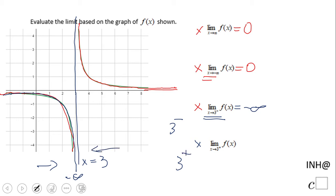The last one says three-plus, meaning what happens on the right side when we go close to three from values larger than three. Looking at the graph, as we get closer and closer to three from the right, the function is going up — so the answer is positive infinity.